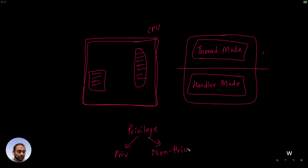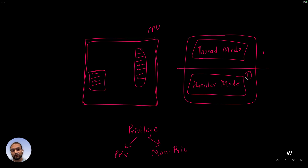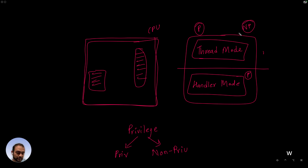This makes sense because you don't want the application code to change the configuration of the CPU — you wouldn't want to allow that. The handler mode is always privileged, so in handler mode you can reach any part of the CPU configuration registers. In thread mode, you can be either privileged or non-privileged.